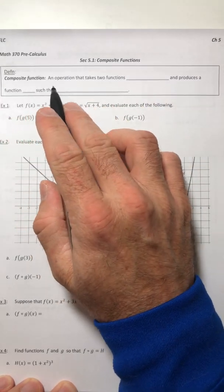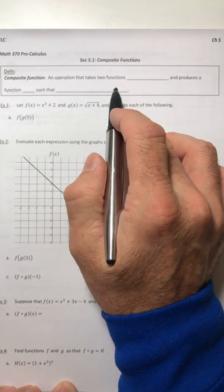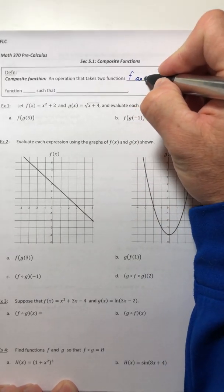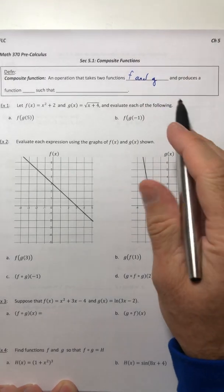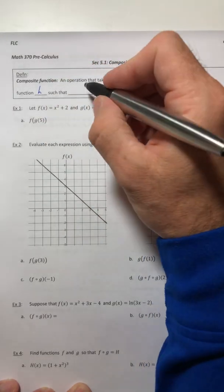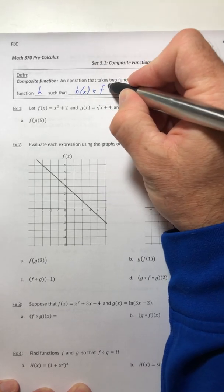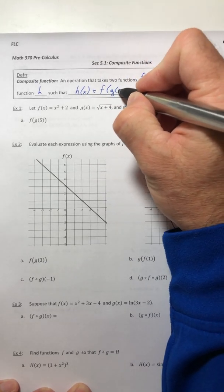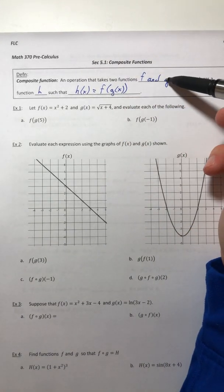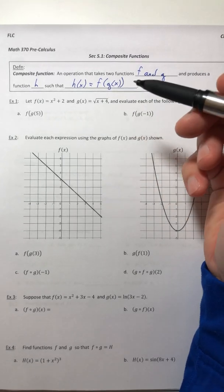A composite function is an operation. It's not an arithmetic operation, but it is an operation that takes two functions, f and g, and produces a function h such that h(x) equals f(g(x)). So we've taken two functions and you've plugged one of them into the other to create a brand new function.